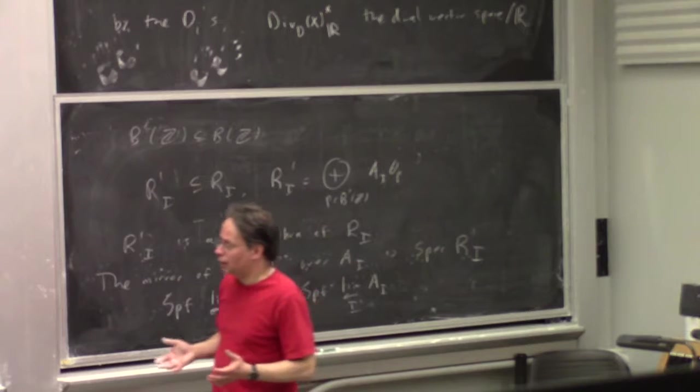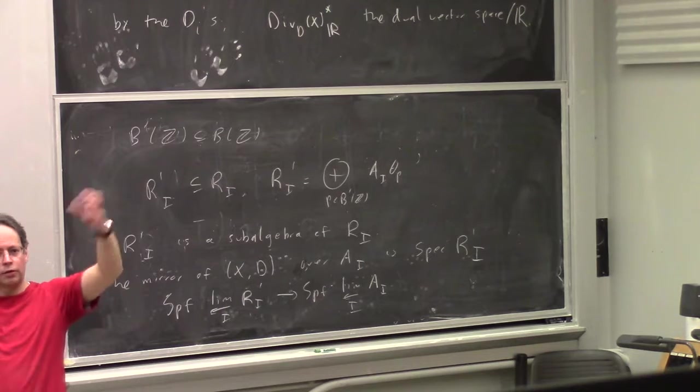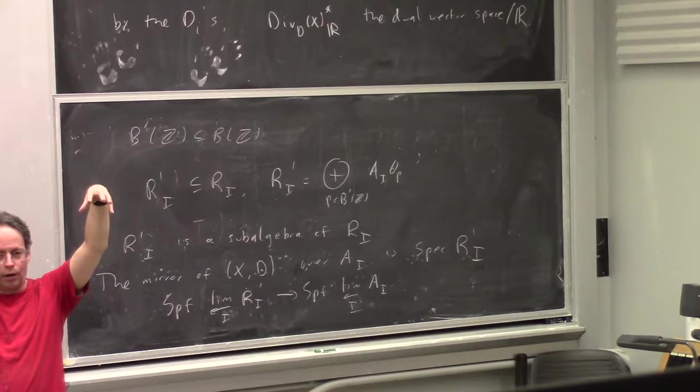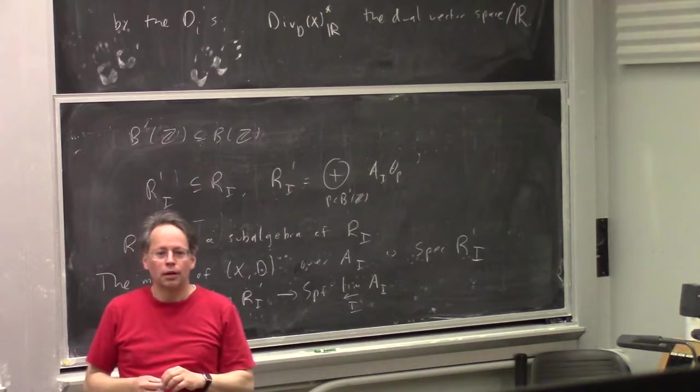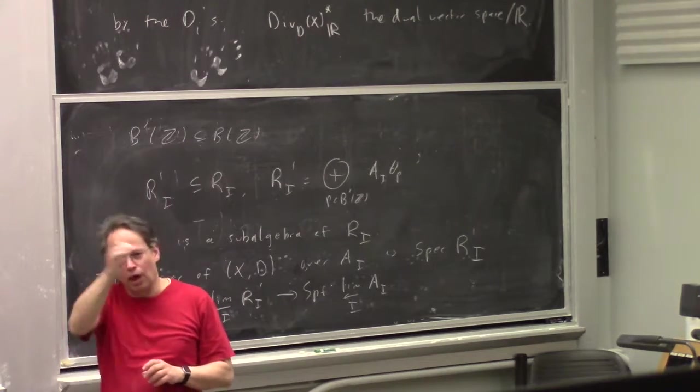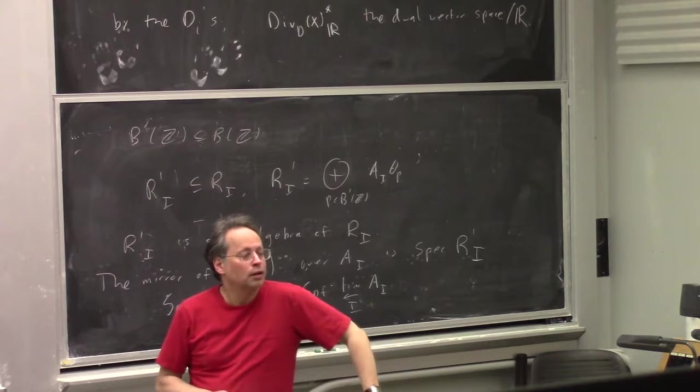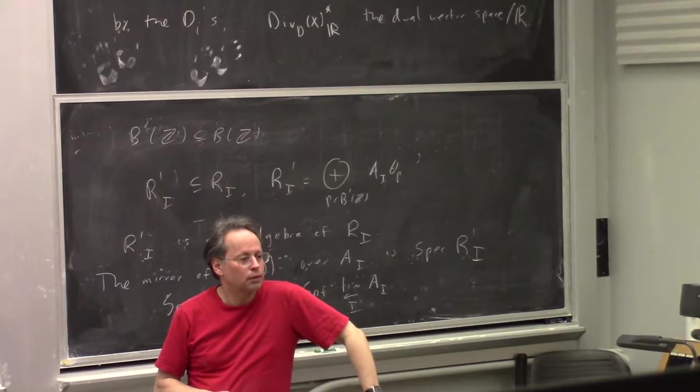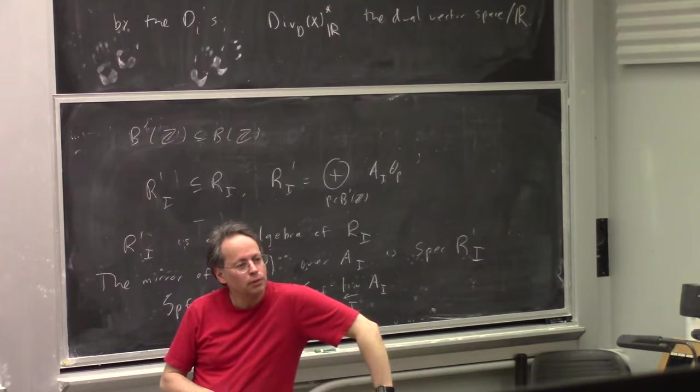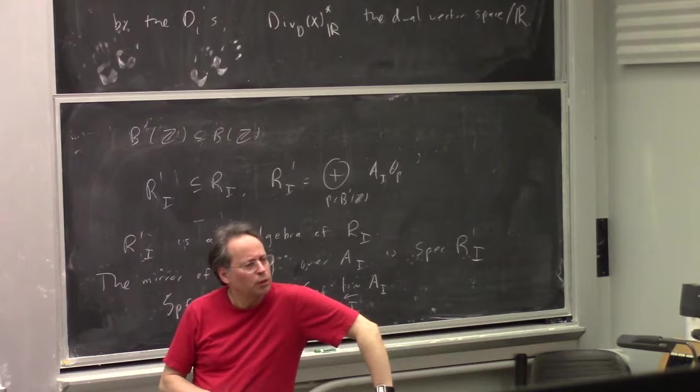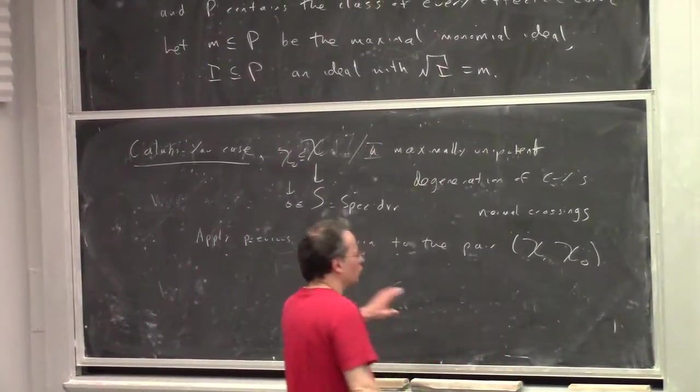So then you define the mirror, the mirror X check over A_I is spectrum of R_I prime. And if you want something formal, you can take formal spectrum. What happens if there are no divisors with a_i equals zero? Well, I guess you don't get it. But you get still a mirror which is a formal object, but over what? Over nothing. Well, I mean, if there are no divisors with a_i is zero, then B is empty or B is zero. So that's not very interesting.